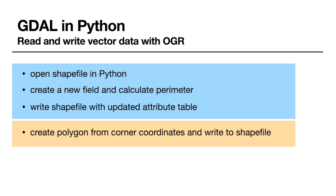First we will look at how to open a shapefile, or any kind of vector dataset, in Python using GDAL. We will work with the shapefile created in a previous tutorial on working with vector data and GDAL from the command line. As you may remember, we created a new attribute field that stores the area of each individual polygon, and today we'll do something similar in Python — computing the perimeter instead.